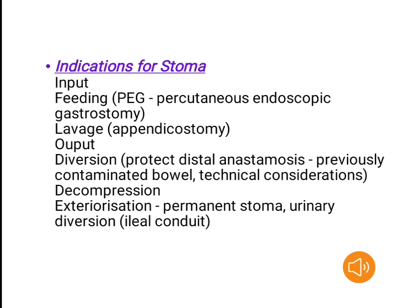Indications for stoma. Input: feeding via percutaneous endoscopic gastrostomy; lavage via appendicostomy. Output and diversion: protect distal anastomosis, previously contaminated bowel, technical considerations. Decompression. Exteriorization. Permanent stoma. Urinary diversion via ileal conduit.